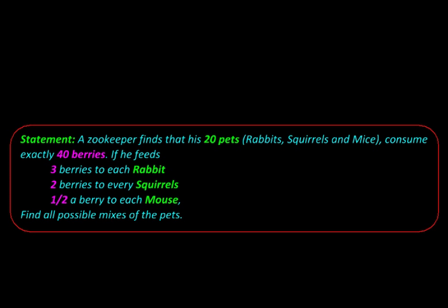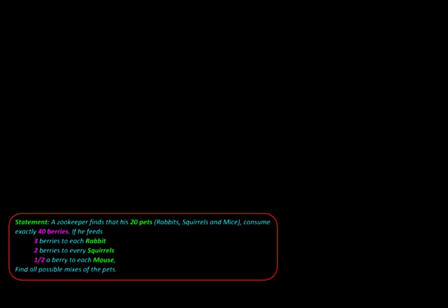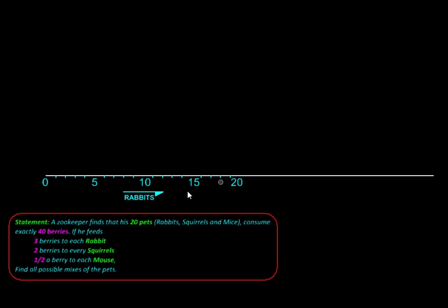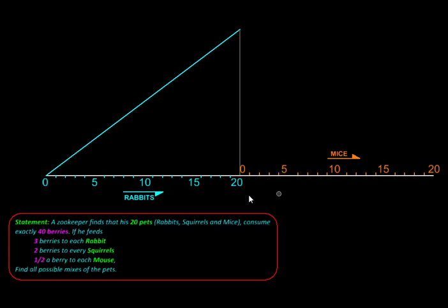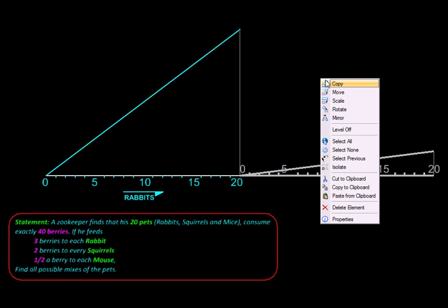If the rabbits vary from 0 to 20 in this manner, the consumption of berries by the rabbits would vary from 0 to 60 like this. And then next to that we can plot the mice, say again from 0 to 20, and their consumption would vary like this. And then we are going to overlap these two consumptions by just mirroring them like this.